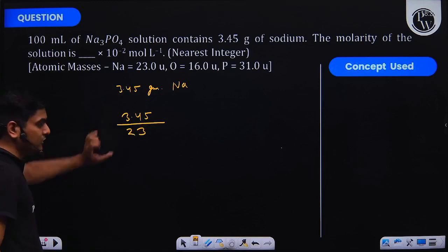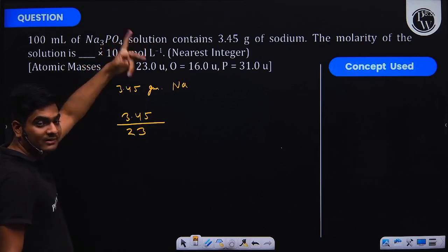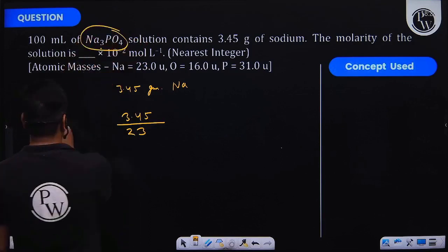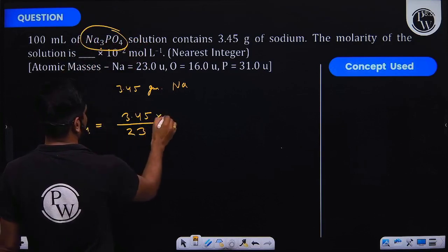And we know that if there are 3 sodium atoms, then it will create one molecule of Na₃PO₄. That means the moles of Na₃PO₄ would be equal to 1/3 times the moles of sodium.